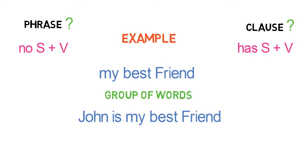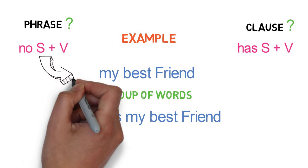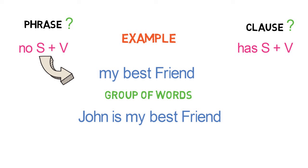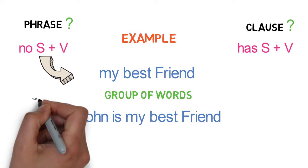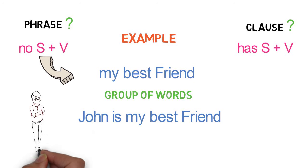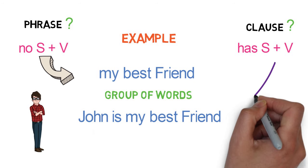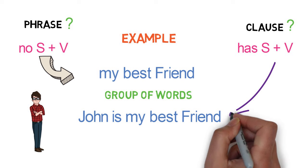Now can you identify? 'My best friend' is a group of words with no subject and verb, so it's a phrase. And 'John is my best friend' has a subject-verb combination — that is, John as a subject and 'is' as a verb — so it's a clause.